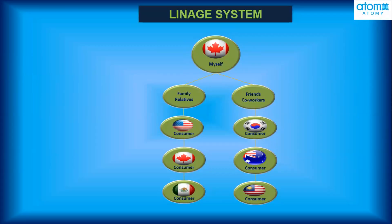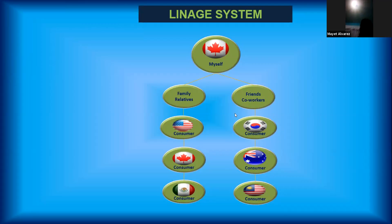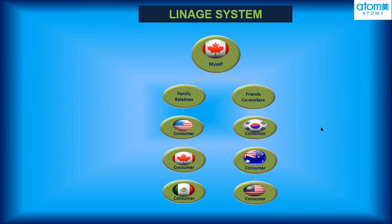What if we have ten more friends or family to register? Just register them one after another — use the first member ID on your left to register another person under that person, and so on. If that family member has a friend who wants to purchase and use our product from the USA or Mexico, we can just register them under our lineage.